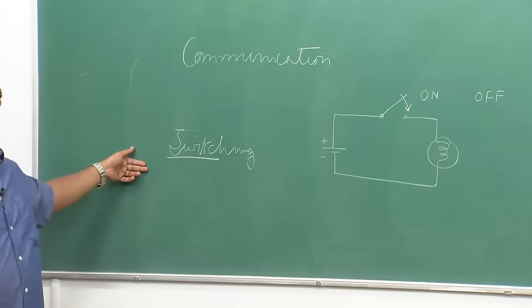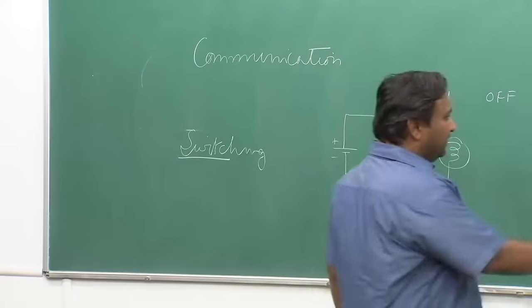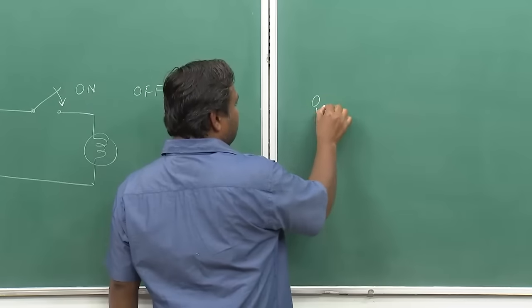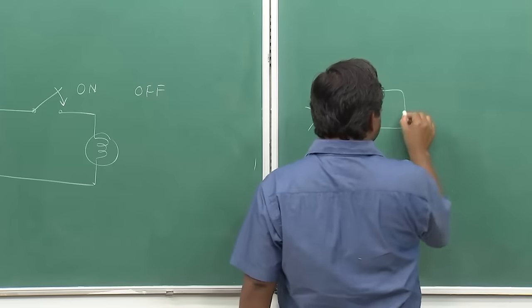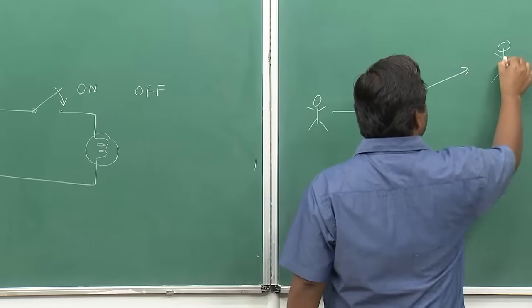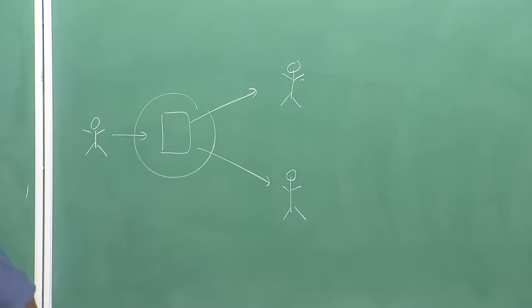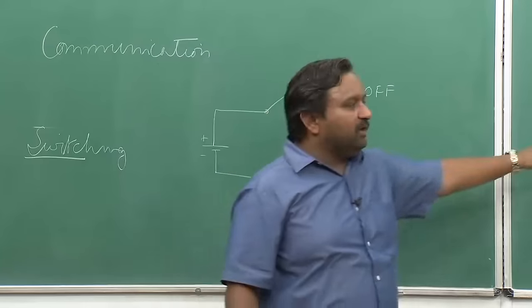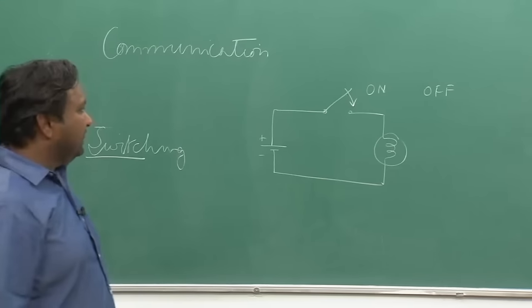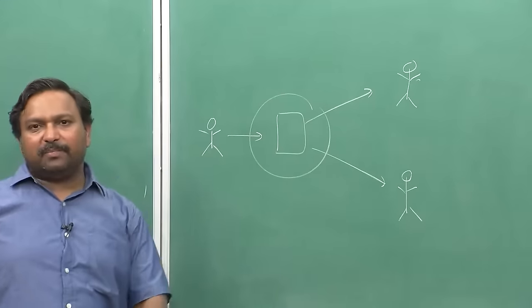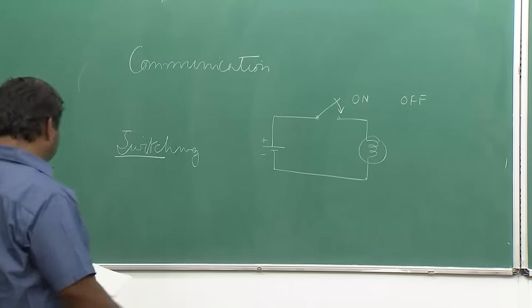If I look at communication and switching together: what you are switching in an electrical switch is a path for electrical power, because of which the lamp will either glow or not. Similarly, if I can somehow switch the communication paths - if one person is speaking, I can have some mechanism by which the signal can go to this person or that person. That is what communication switching is all about. When the signals passing through these communication paths are digital signals, we call it digital switching.